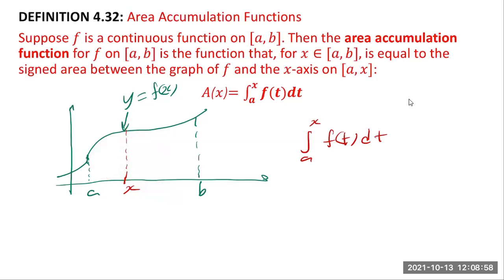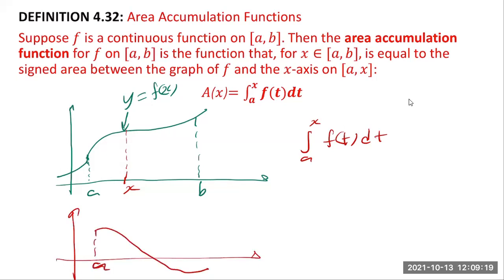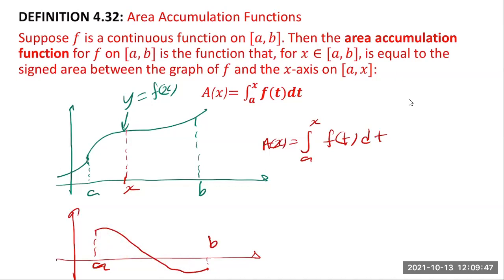It's a signed area: if the graph goes below the x-axis, areas above are counted as positive and areas below as negative. For example, with a graph that dips below the x-axis, your area accumulation function counts the positive area and subtracts the negative area, then takes their sum.